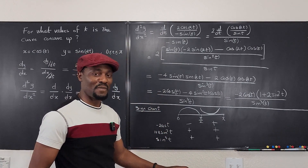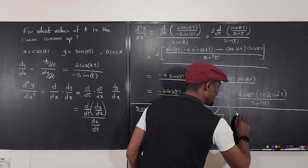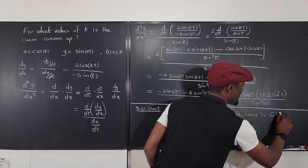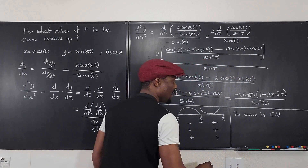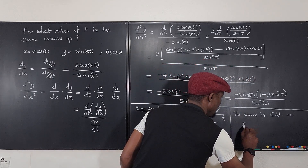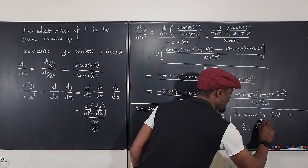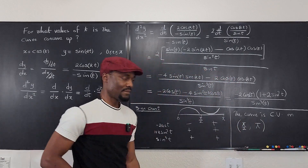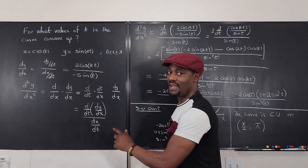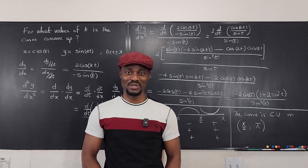So the curve is concave up on the interval from pi over 2 to pi. That's the answer. Never stop learning, because those who stop learning have stopped living. Bye-bye.